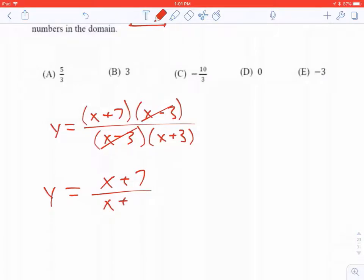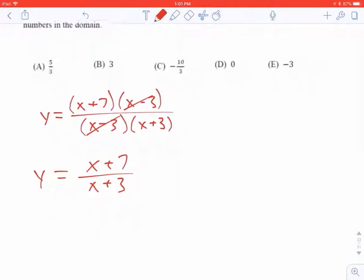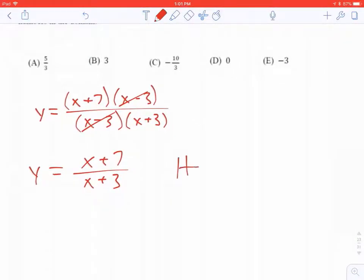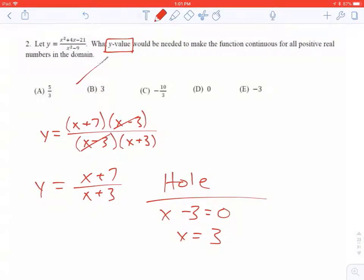It's kind of like goal in soccer, but you're not European, so you don't even know that. There's a hole at x minus 3 equals 0. There's a hole at x equals 3. The problem asks for a y value.